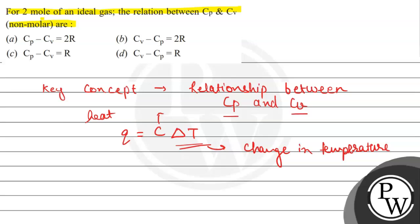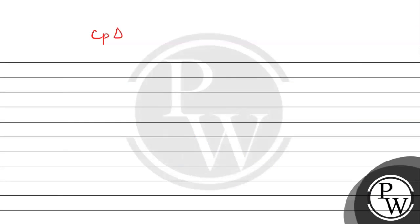Now let us derive the equation between Cp and Cv. At constant pressure, we can write Qp = Cp·ΔT. Heat at constant pressure is equivalent to the change in enthalpy, so Qp = ΔH. Therefore, Cp·ΔT = ΔH — this is equation 1.